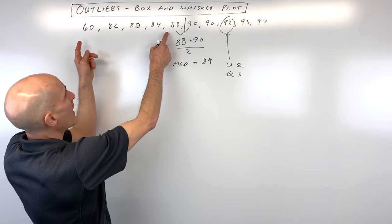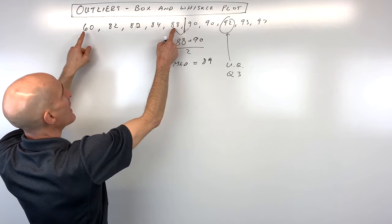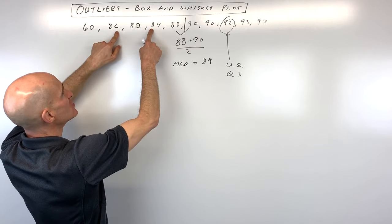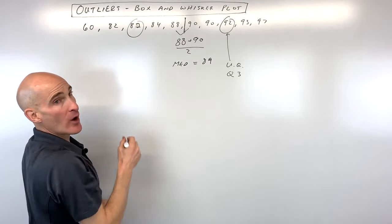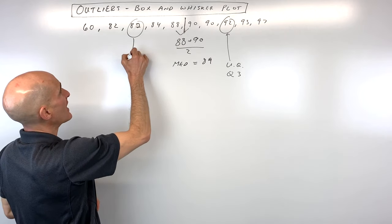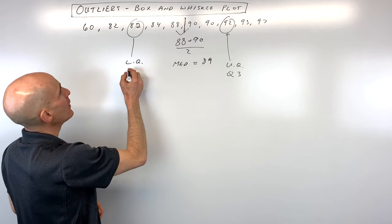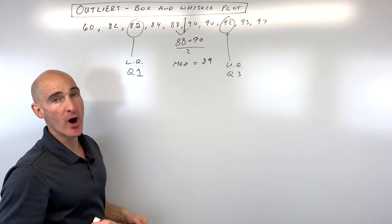Now, same thing with the lower half of the data. Again, you don't want to count the median, just to the below or to the left. 1 and 1, 2 and 2. You can see 82 is the middle one. That's our lower quartile, and this is also called the first quartile, or Q1.